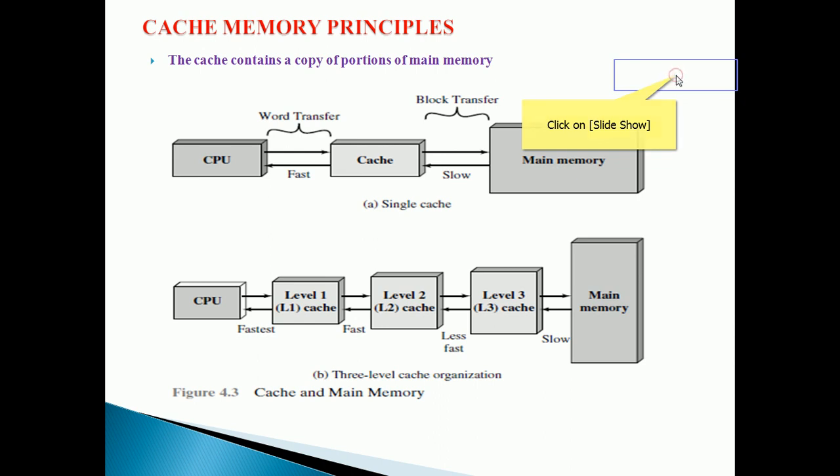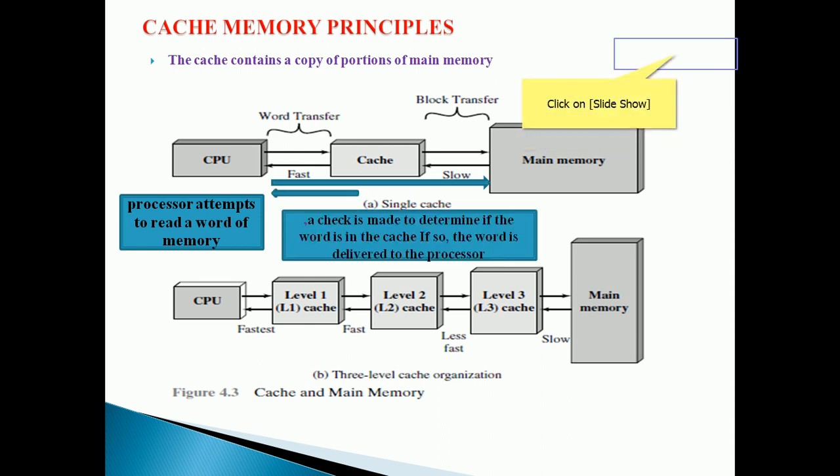In the CPU, whenever requests or processor attempts to read a word of memory, during that time a check is made to determine if the word is in the cache, and if it is present there the word is delivered to the processor.